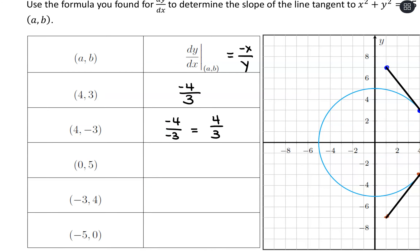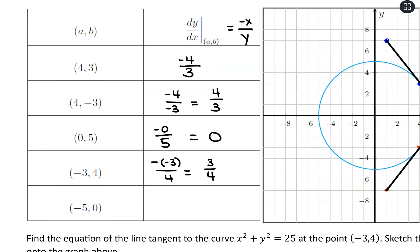At (0, 5), we have negative 0 over positive 5, which is just 0. At (negative 3, 4), we have negative negative 3 over positive 4, which is positive 3 fourths. At (negative 5, 0), we have negative negative 5 over 0 — we can't divide by 0, so the slope does not exist; it's undefined. That means we're getting a vertical tangent line at that point.